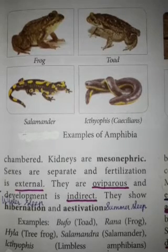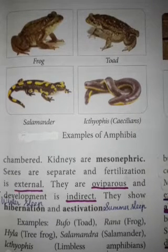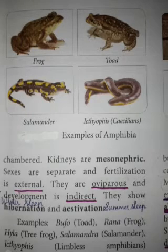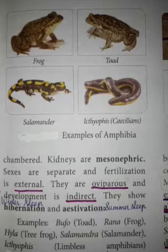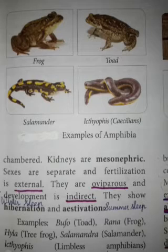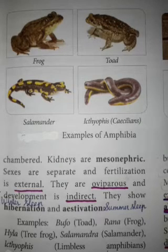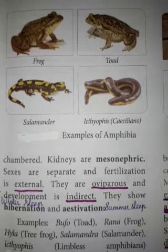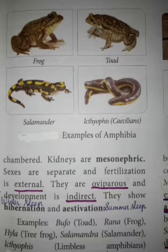Characteristic features of amphibians: they are aquatic and terrestrial; they are poikilothermic; their body is divided into head, trunk and four pairs of limbs; tail may be present or absent; skin is smooth or rough, moist, pigmented and glandular; eyes have eyelids; ear is the tympanum; respiration through gills, lungs and skin; heart is three-chambered; mesonephric kidneys; development is indirect; fertilization is external; they are oviparous; they show hibernation and estivation.